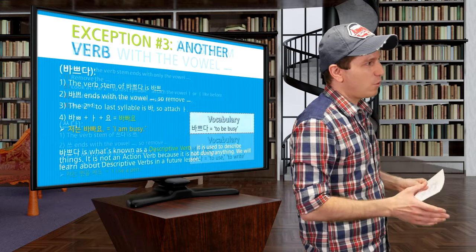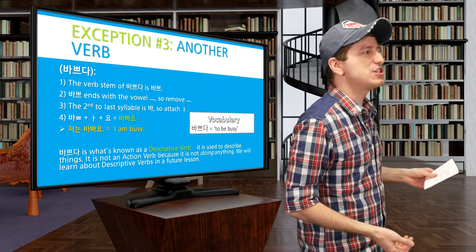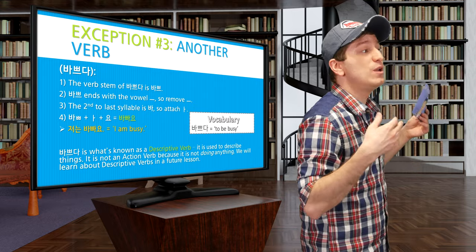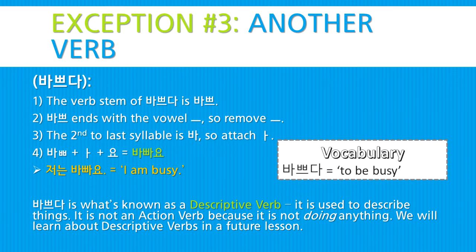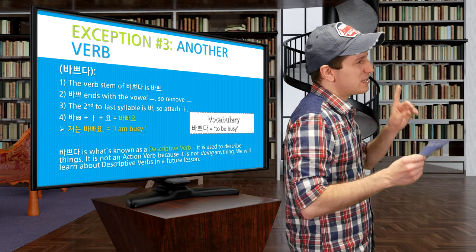Another example with the 으 exception: 바쁘다 (to be busy). The verb stem is 바쁘, ending with 으, so we remove it. We look at the second-to-last syllable, which is 바. It ends with 아, so we attach 아, and we get 바빠. Attach 요: 바빠요. Sentence: 저는 바빠요 — I am busy. 바쁘다 is a descriptive verb, not an action verb, because it describes things. We'll learn about descriptive verbs in more detail in a future lesson.